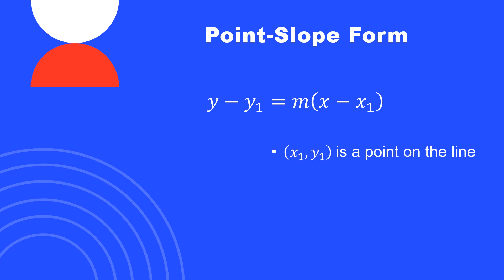In point-slope form, M is the slope and X1, Y1 is a point on the line. For the slope formula we needed two points, but for point-slope form we only need one point — we do, however, also need to know the slope.